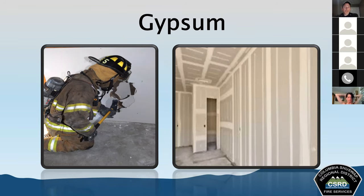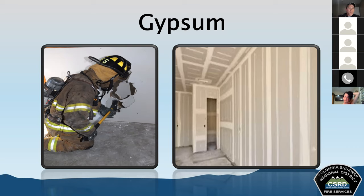Gypsum — also known as drywall, gyprock, or sheetrock — has a high water content inside it. It absorbs a great deal of heat as that moisture evaporates, giving it excellent heat-resistant and fire-retardant properties that delay fire progression within a structure. It does break down gradually under fire conditions. Gypsum is commonly used to insulate steel and structural members; when it fails, the structural members behind it are subjected to high temperatures and could end up failing as well.